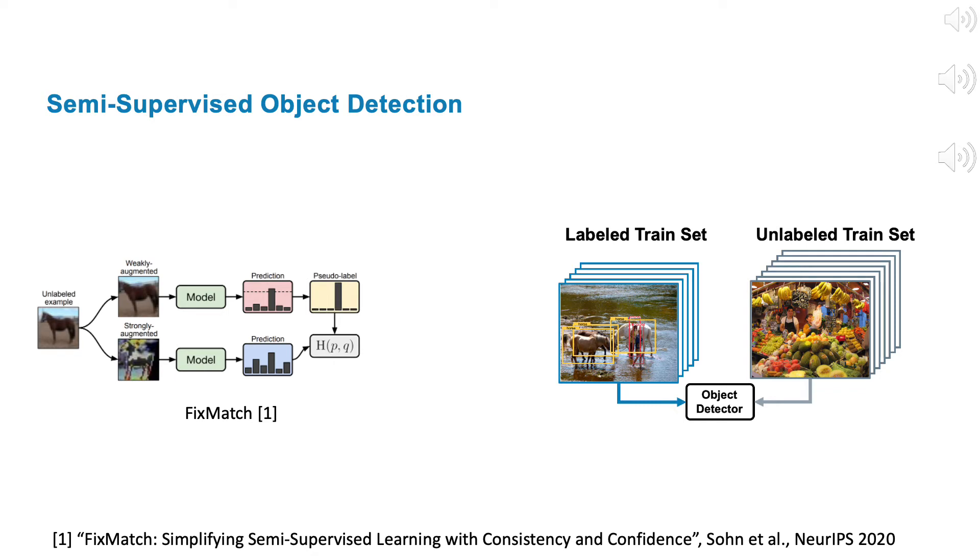A straightforward method is to apply existing semi-supervised classification techniques to object detection, and pseudo-labeling is one of the most successful methods in the classification task.